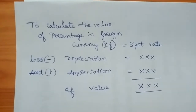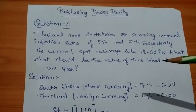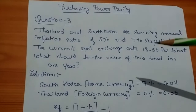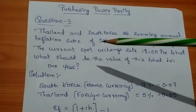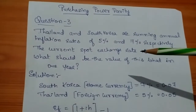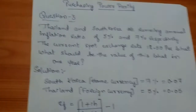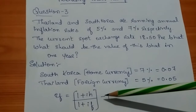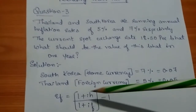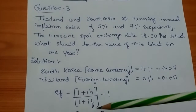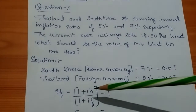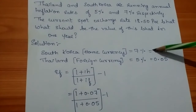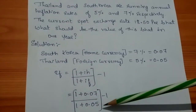To find the value of the Thai Baht in one year, we calculate whether it has appreciated or depreciated using the inflation rates. The formula for the percentage change in the foreign currency is: (1 + ih) / (1 + if) − 1, where ih is the home currency's inflation rate and if is the foreign currency's inflation rate. Substituting: (1 + 0.07) / (1 + 0.05) − 1.